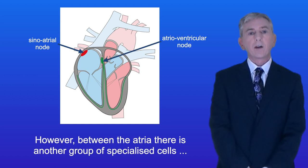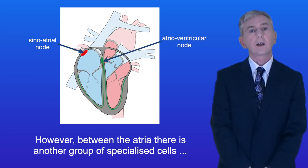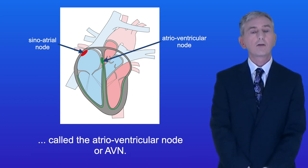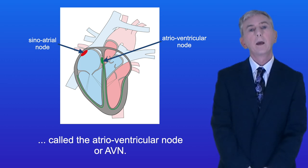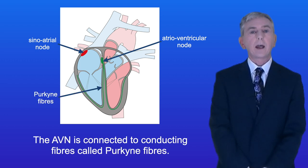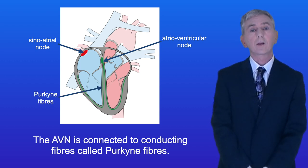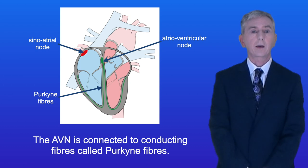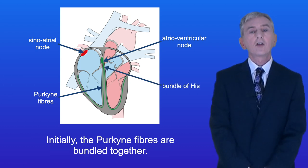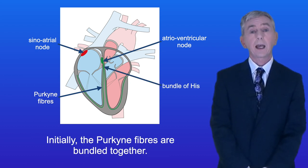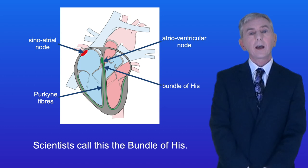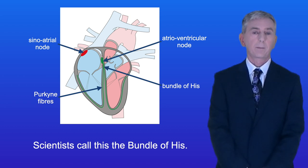However, between the atria there's another group of specialized cells called the atrioventricular node or AVN. The AVN is connected to conducting fibers called Purkinje fibers. Initially the Purkinje fibers are bundled together and scientists call this the bundle of His.